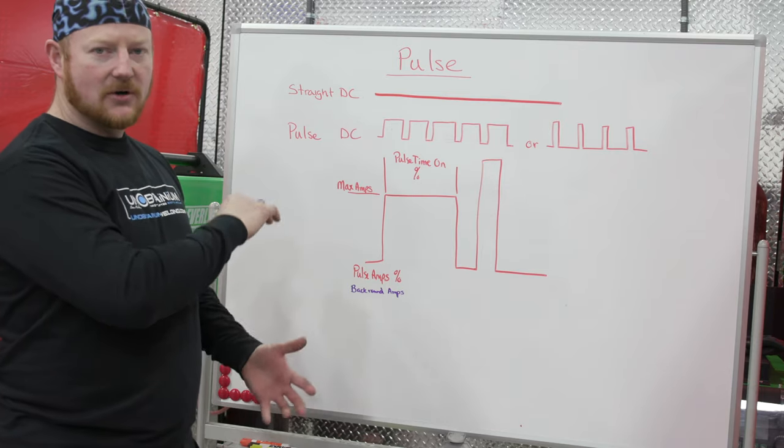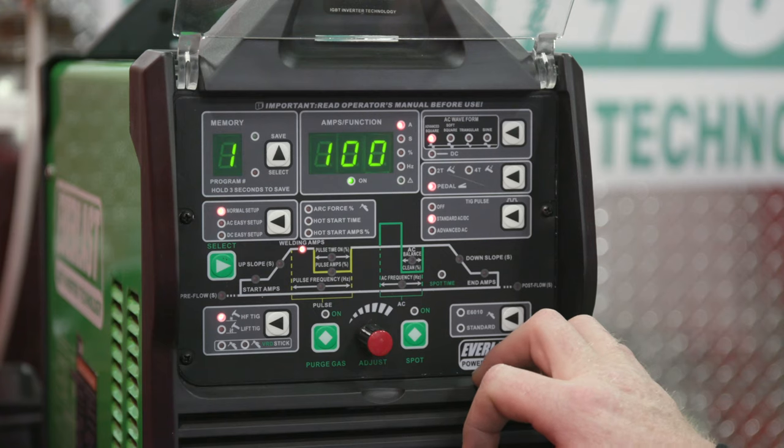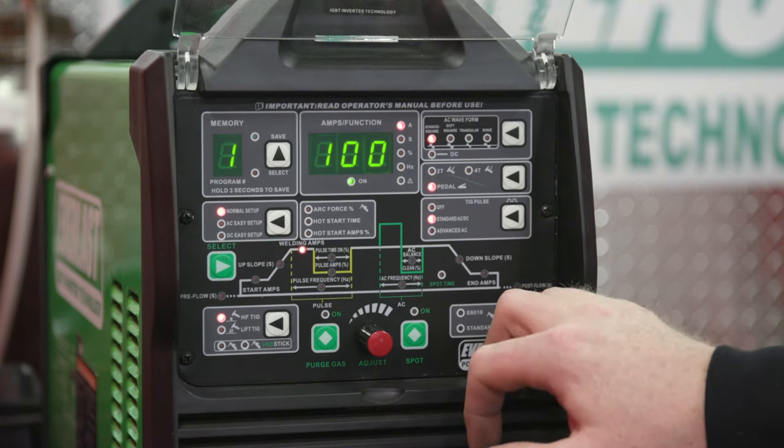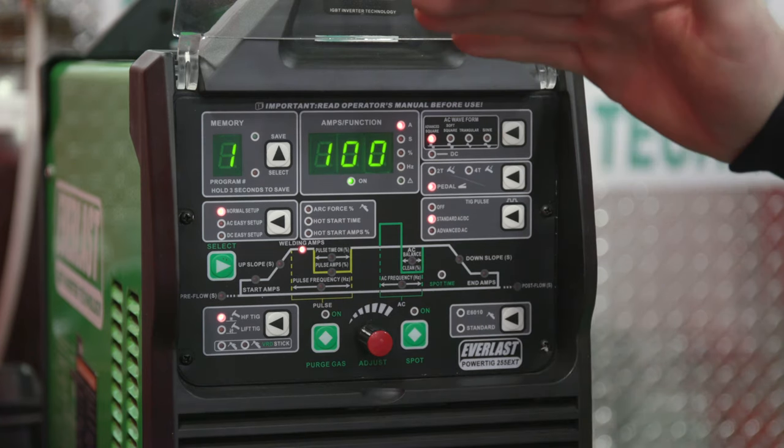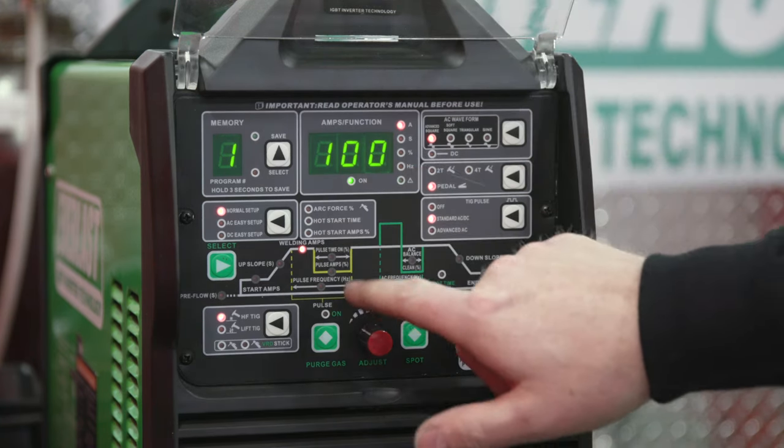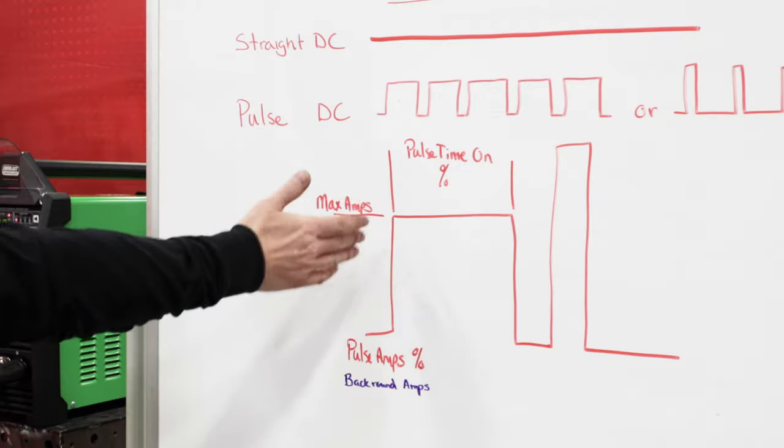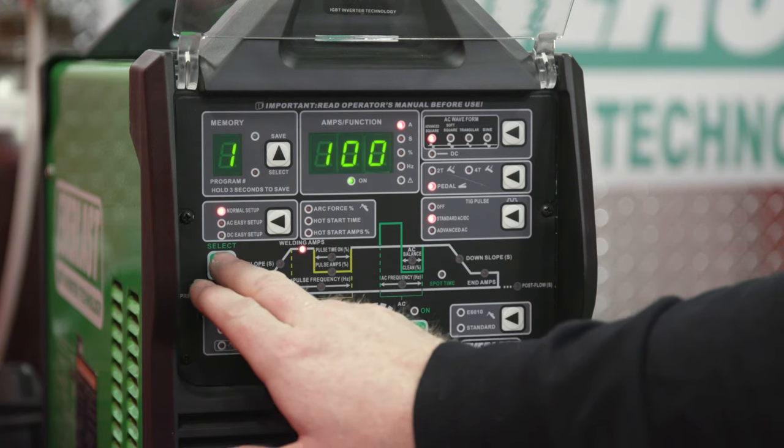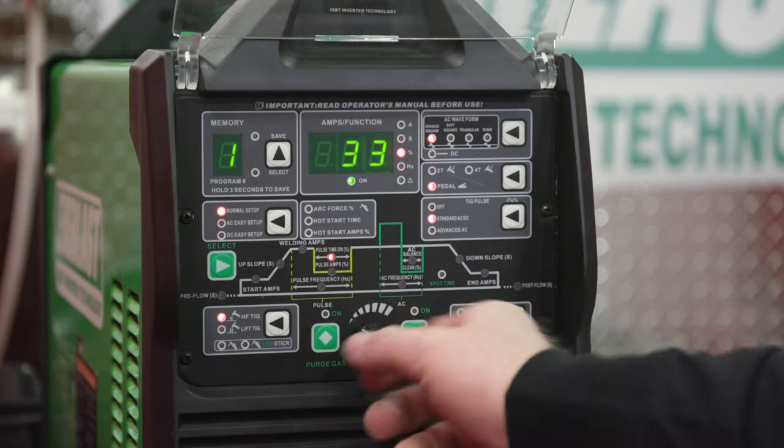So let's go over to the machine and we'll go through how to set this up. When we're starting to set up pulse, we have to remember that we have to set the actual amperage we want first on the machine. That's our welding amps, which is our max amps. So when our pulse is on, what's the maximum amperage we want? We're going to set that at 100.